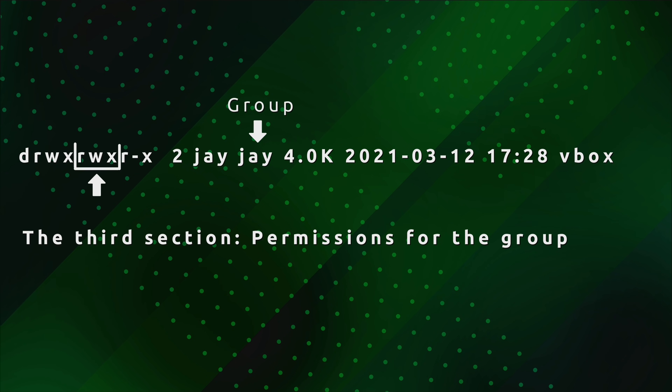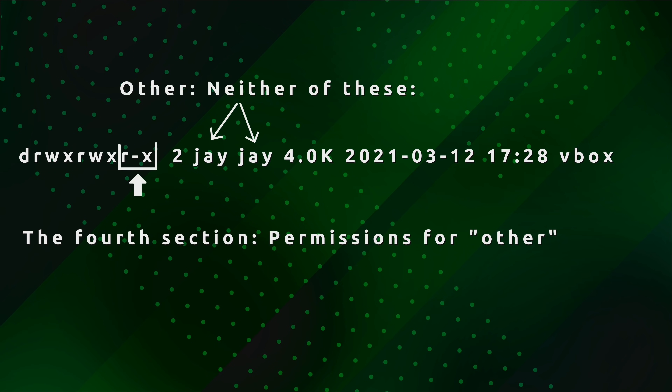So we have rwx again — read, write, and execute — and this section of the permission string pertains to the group. The last group of three pertains to other, also known as world — essentially everybody else. Other pertains to a user other than the user that owns the file, and a group other than the group that owns the file. It's basically everybody else — neither the owning user nor the owning group — it's public, it's open to the world.